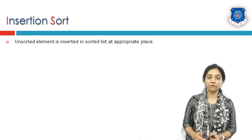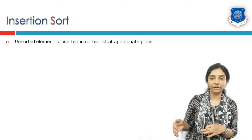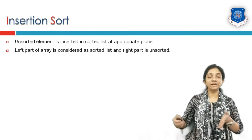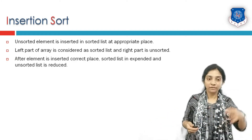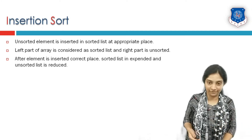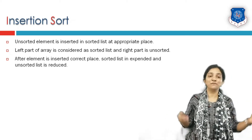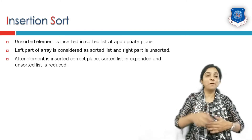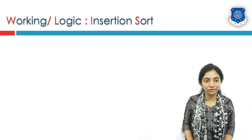In insertion sort, the complete list is treated in two parts. One part is the sorted list and the other part is the unsorted list. The left part of the array is called sorted and the right part is called unsorted. We take an element from the unsorted list and insert it in its correct place in the sorted list, so the sorted list expands by one element and the unsorted list is reduced by one element. We keep repeating this process for n minus one elements, so all n minus one elements get sorted and the last element gets sorted by itself.